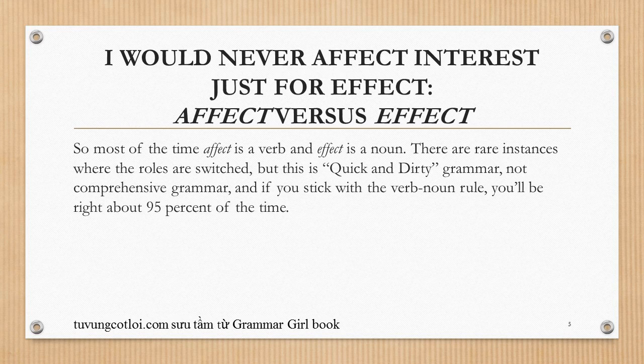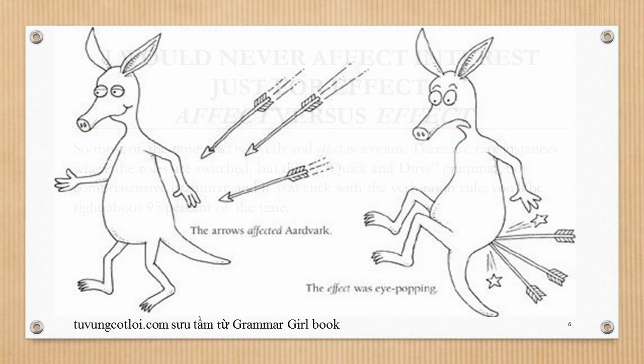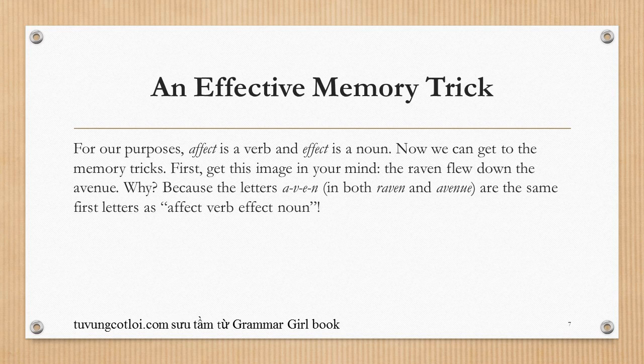Most of the time, affect is a verb and effect is a noun. There are rare instances where the roles are switched, but this is quick and dirty grammar, not comprehensive grammar — if you stick with the verb-noun rule you'll be right about 95% of the time. Here's an effective memory trick: get this image in your mind — 'the raven flew down the avenue' — because the letters A-V-E-N in both 'raven' and 'avenue' are the same first letters as Affect-Verb, Effect-Noun.